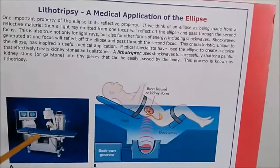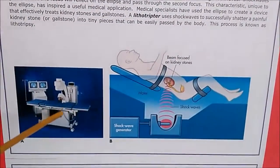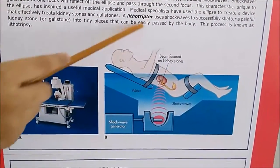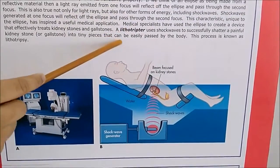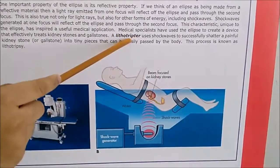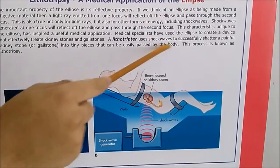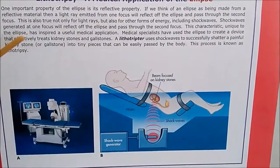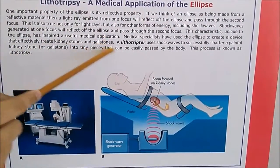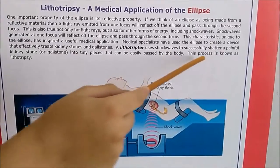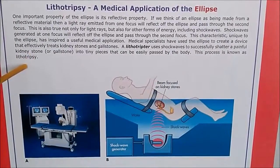In figure A we can understand this is the lithotripsy. A lithotripsy uses shock waves to successfully shatter a painful kidney stone into tiny pieces that can be passed by the body. This process is known as lithotripsy.